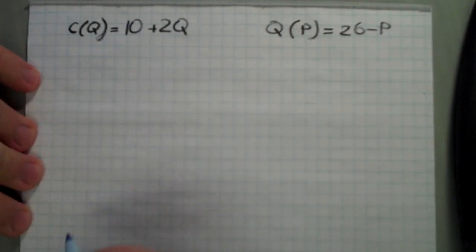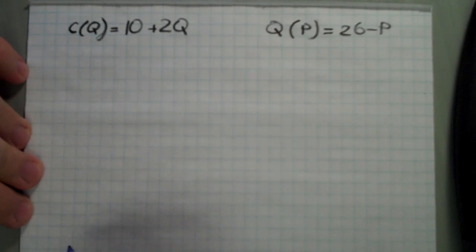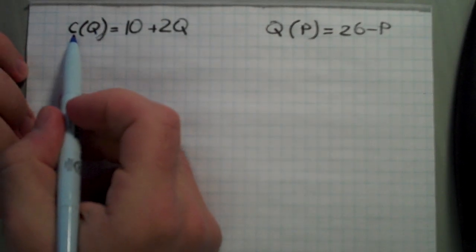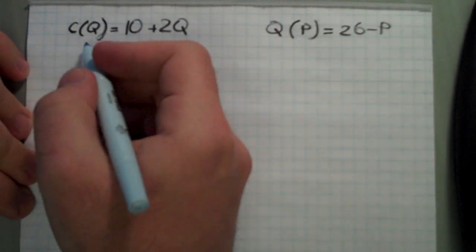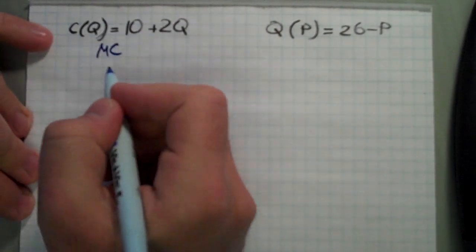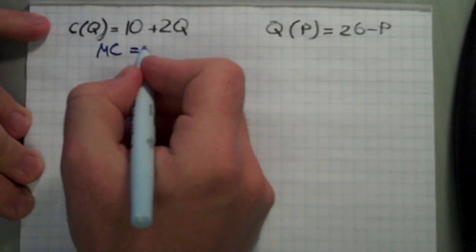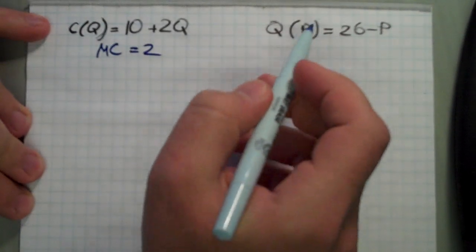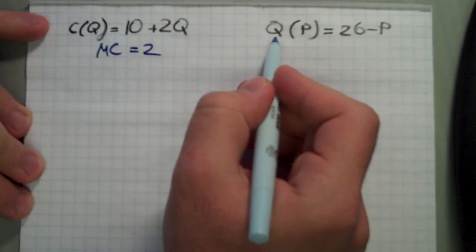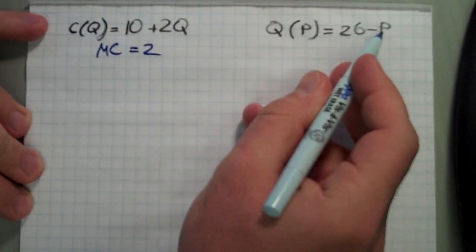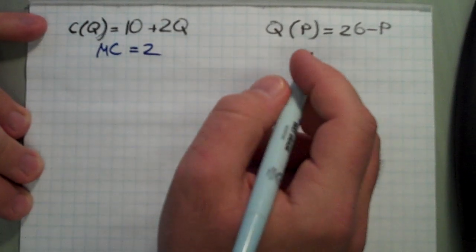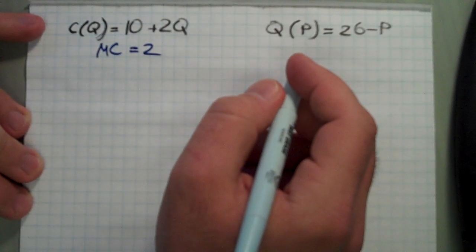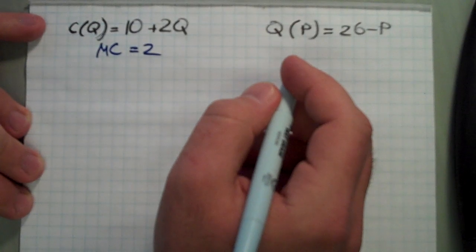This is a demonstration of the solution for homework number four. The setup: cost is equal to 10 plus 2Q. Right away we can calculate the marginal cost, which we will need later — it's equal to 2. Then we have the demand which is equal to Q equals 26 minus P. Let's skip questions one and two since they're just calculations.